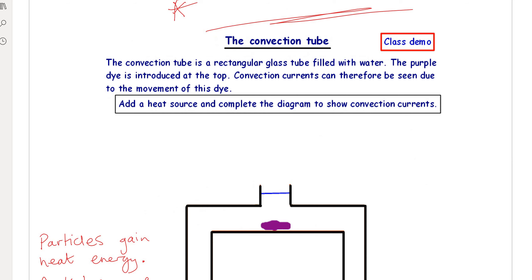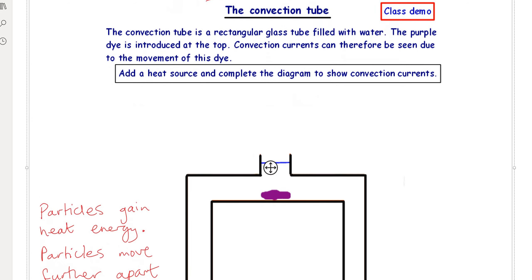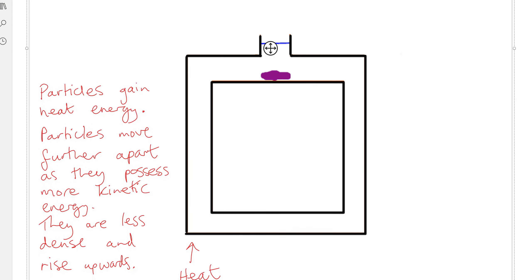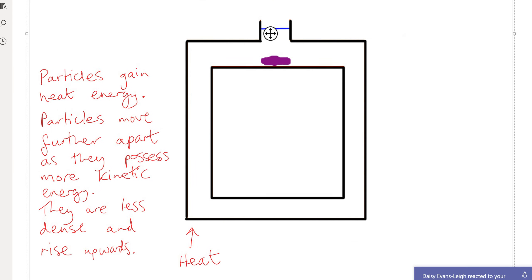The next thing that we look at is the convection tube. Here it is here, and you can see that there is heat being administered on the left-hand side of the tube. I'm just going to read through this now.